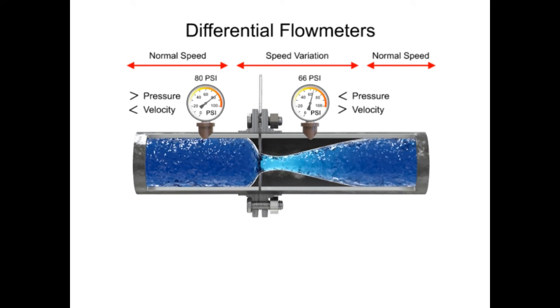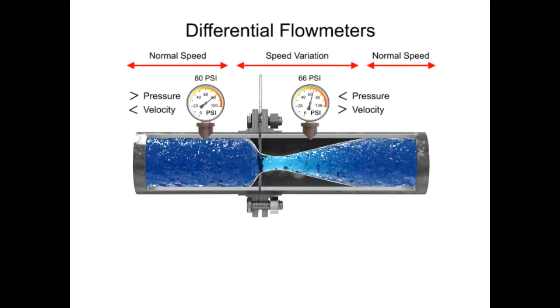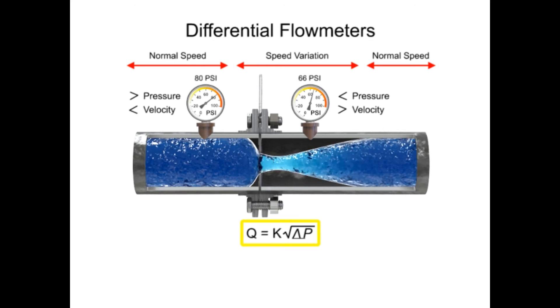With a known differential pressure and velocity of the fluid, the volumetric flow rate can be determined.